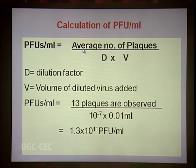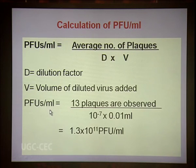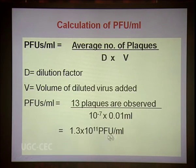To calculate phage titer, count the average number of plaques on a countable plate, then divide by the dilution factor and the volume of phage sample used. For example, 13 plaques at a dilution of 10⁻⁷ using 10 µl (0.01 ml): plaque-forming units per ml = 13 ÷ (10⁻⁷ × 0.01) = 1.3 × 10¹¹ PFU/ml.